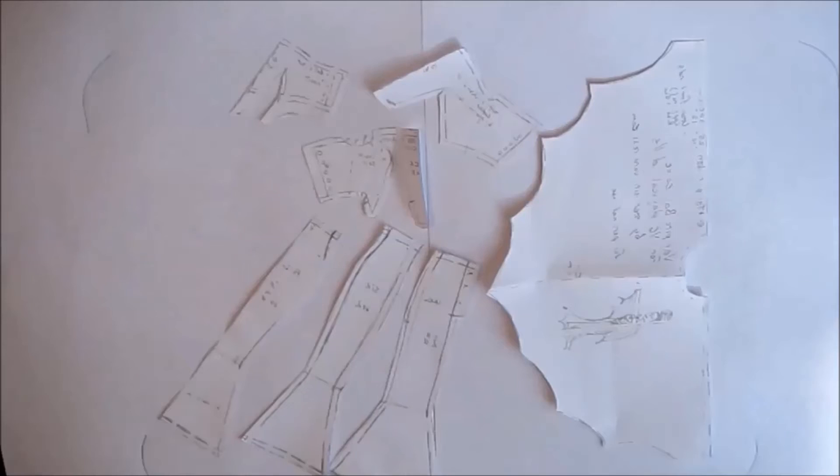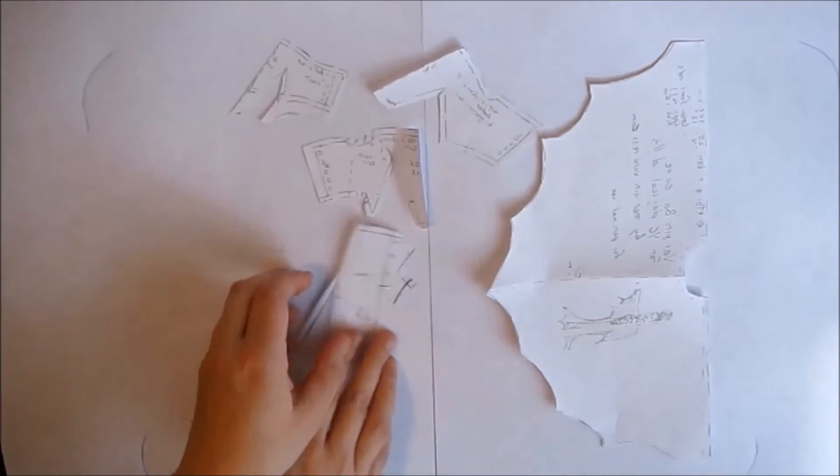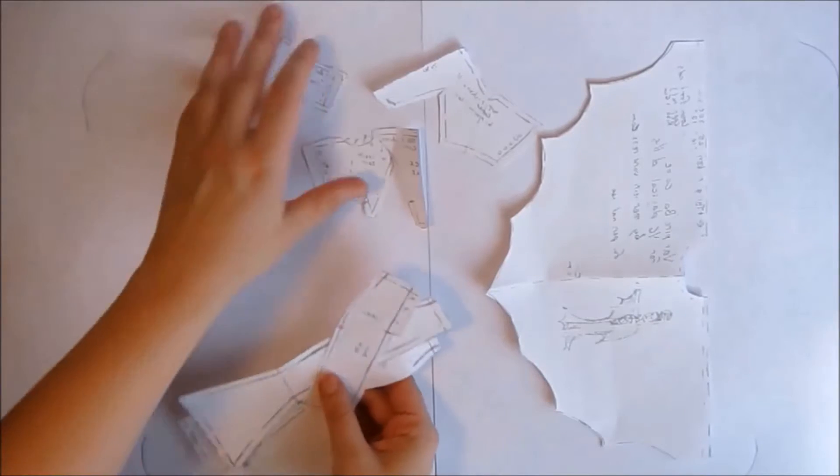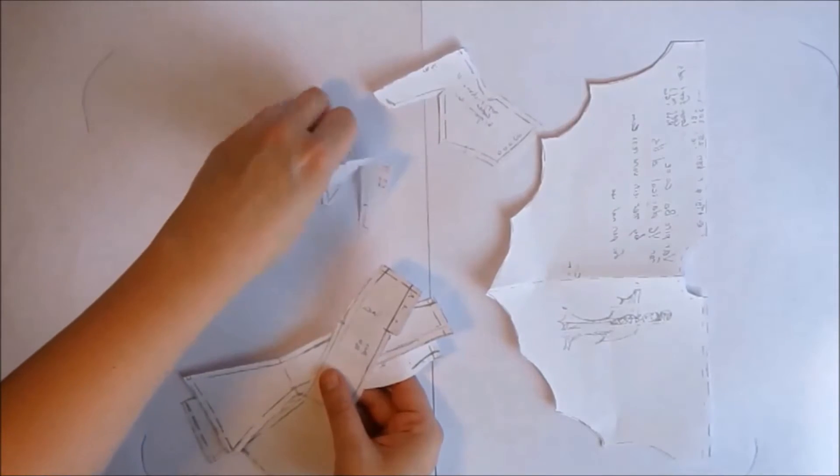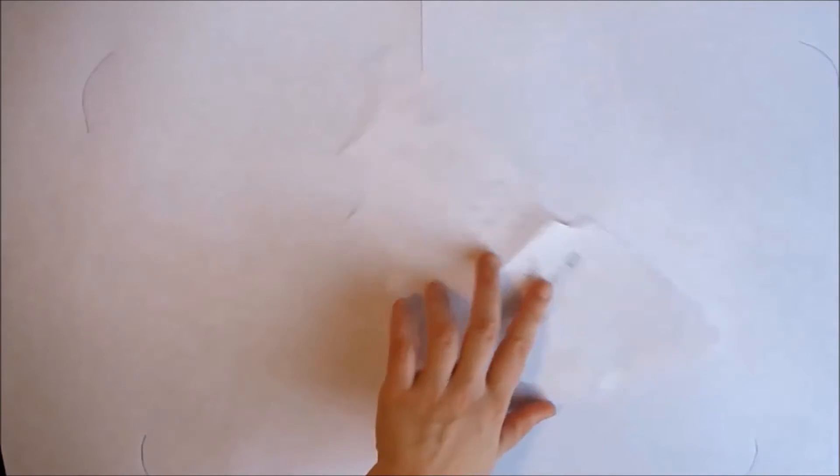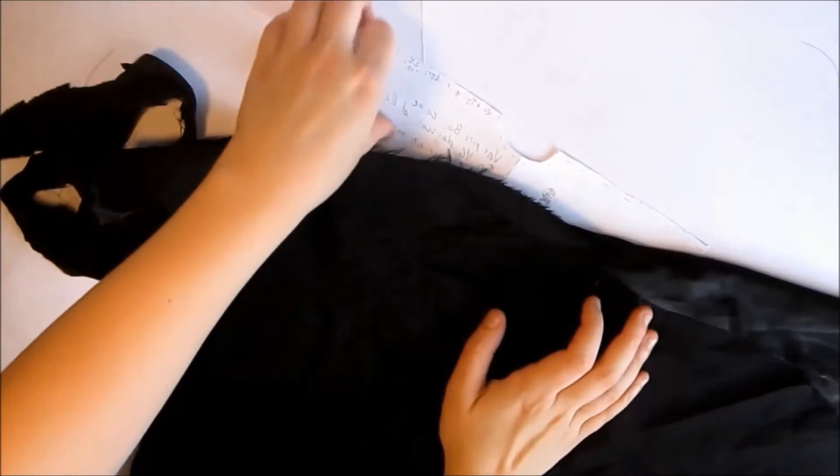The patterns have two lines. The inner line is the seam line where your stitches should go. The outer line is for small seam allowance. Sometimes you may wish to add a little more seam allowance, and you can do this by drawing around the edge a little further.